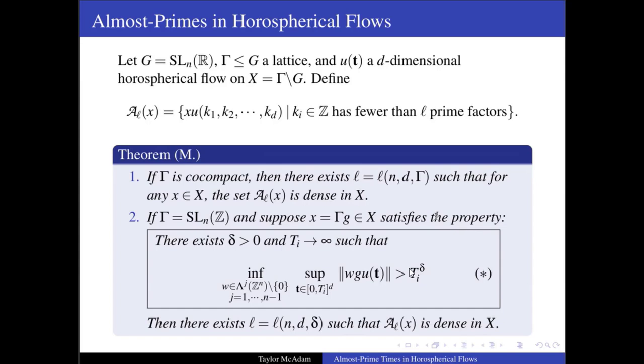Some notes about this theorem. Currently this theorem can be stated for arbitrary horospherical flows with gamma co-compact and for abelian U with gamma equal to SL(n,Z). But ongoing work allows for the removal of the abelian assumption, and I'm currently working with Manuel in the audience to get rid of base-point dependence using a method that's a little bit similar to what Sarnak and Ubis do in their original paper. Also, the constant L depends polynomially on n and d, and in the non-compact case inversely on delta_X.